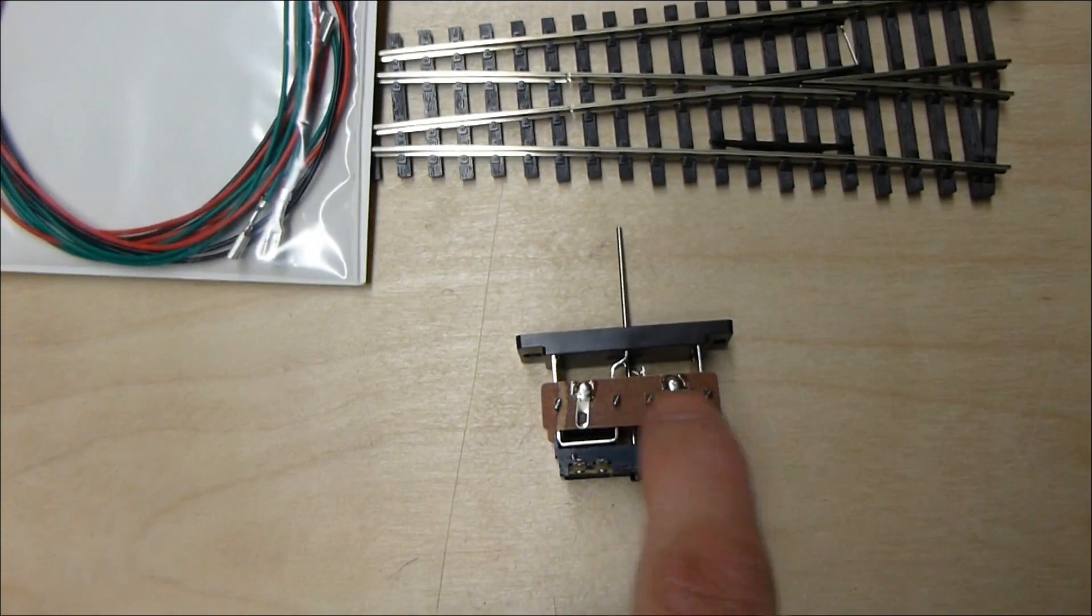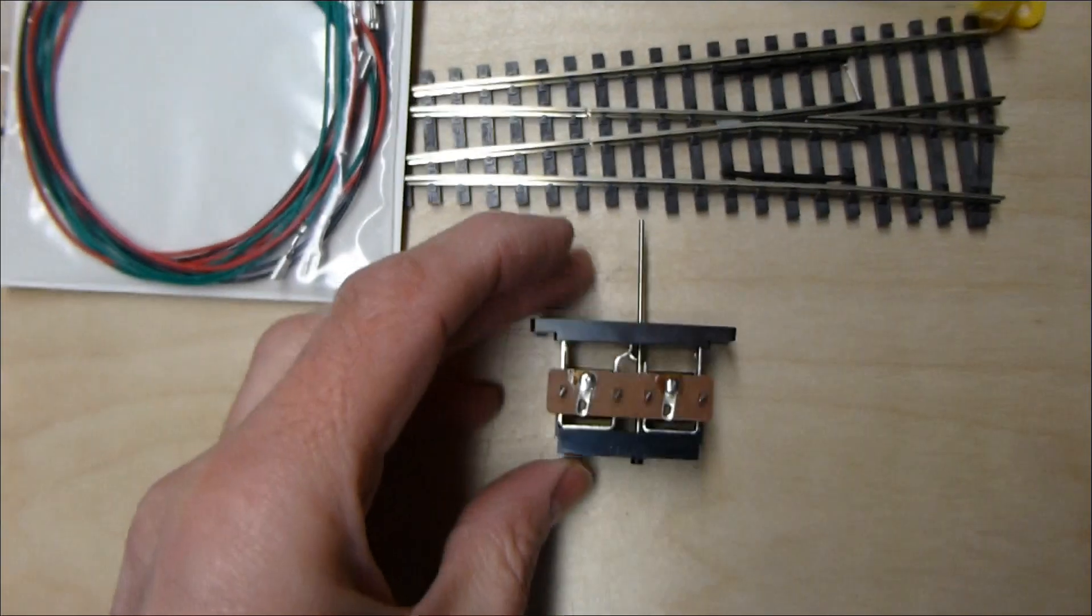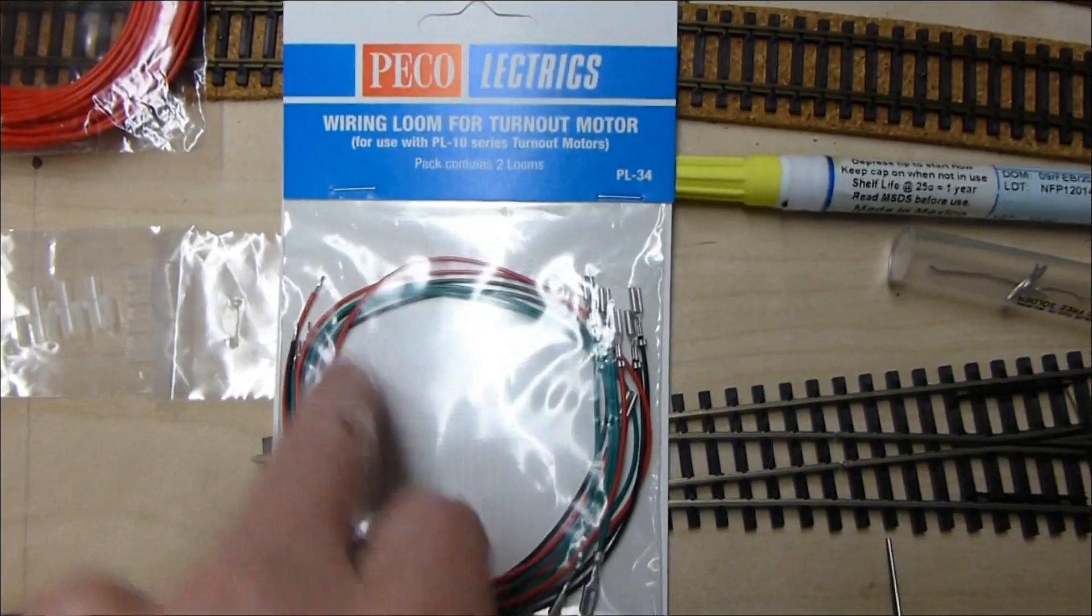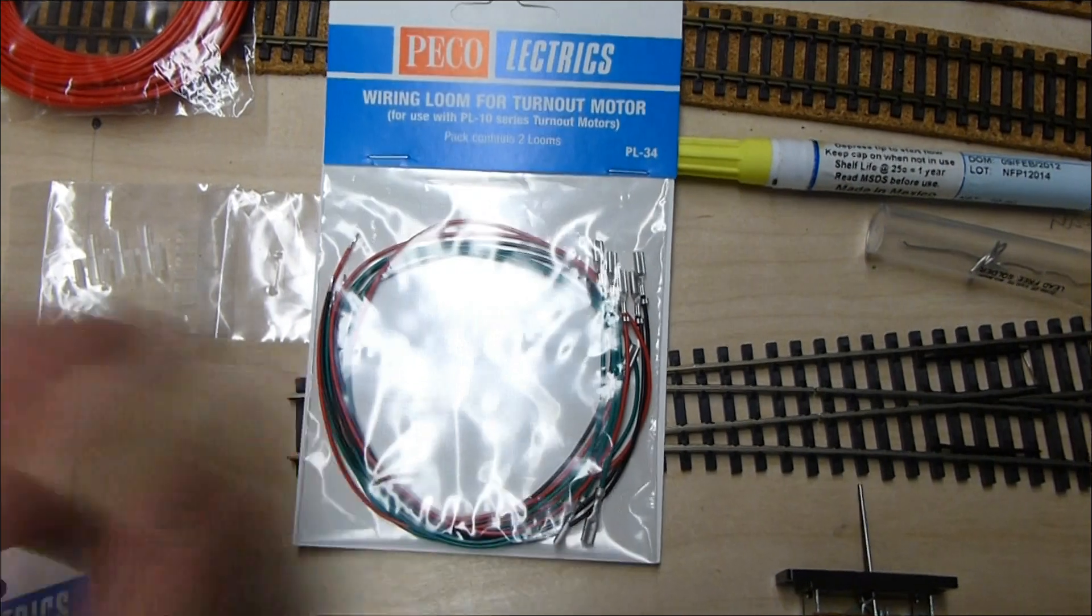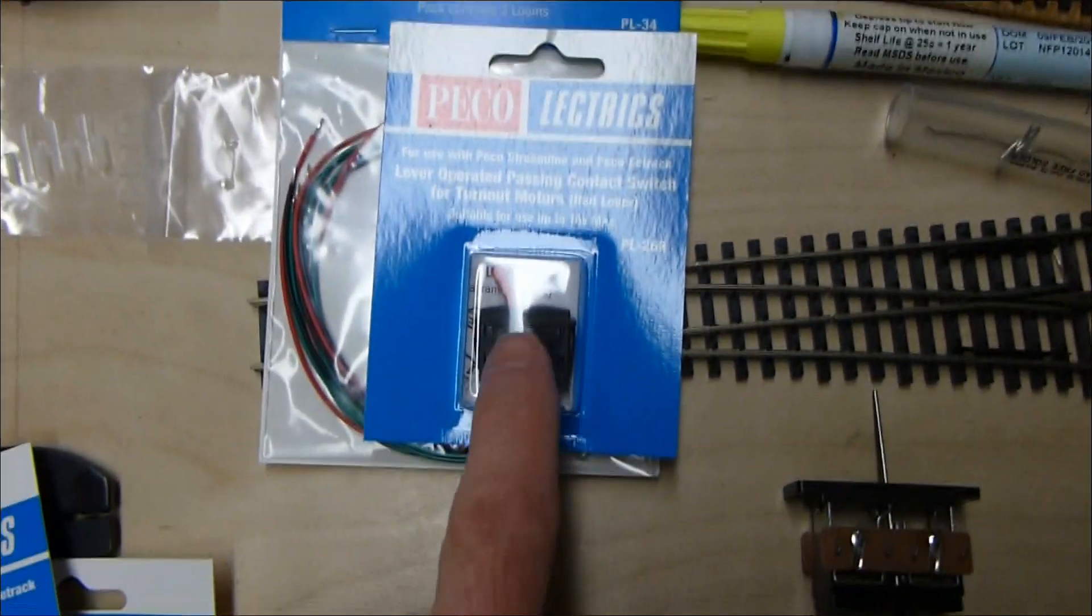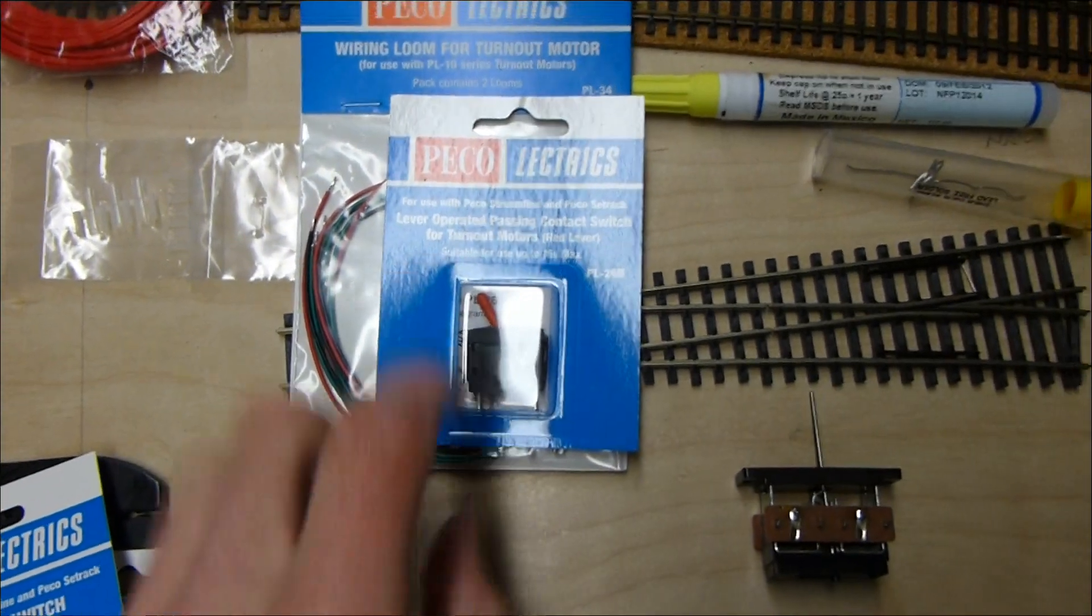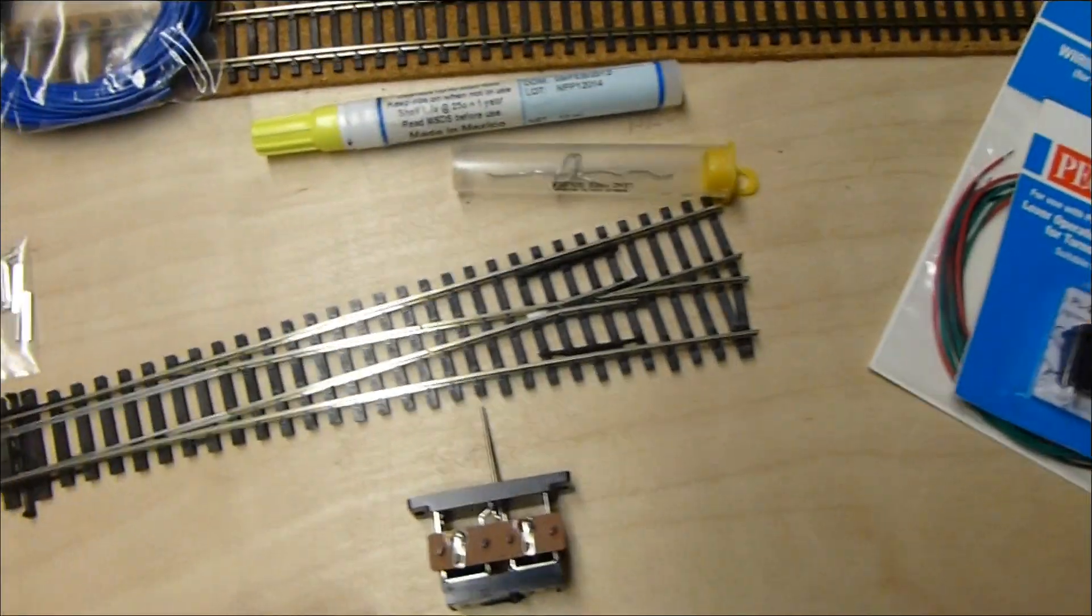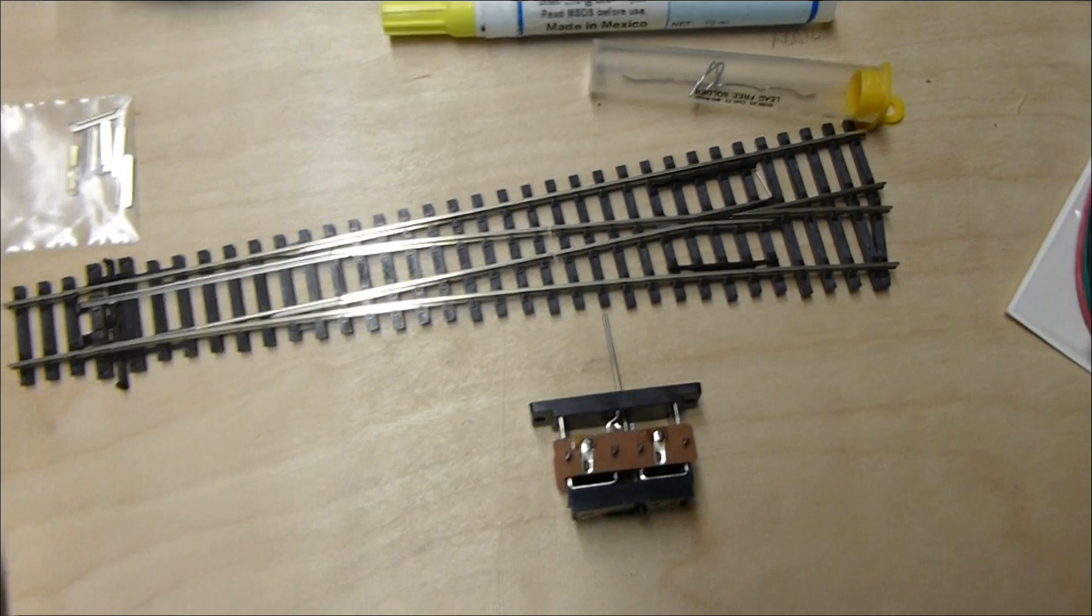And that just fits to your point motor. The green ones will go there. And then on the other side, you'll have a black and a red. And they'll go back to the switch for switching it. That's nothing to do with the DCC part. That's just switching it. But if you want DCC, you've got to use an accessory switch, which I've got here.